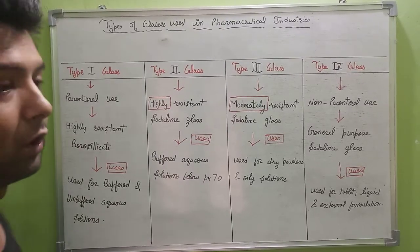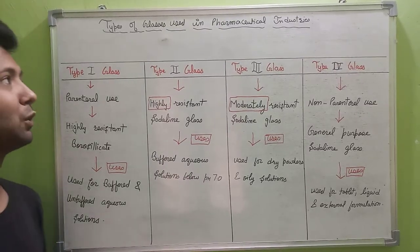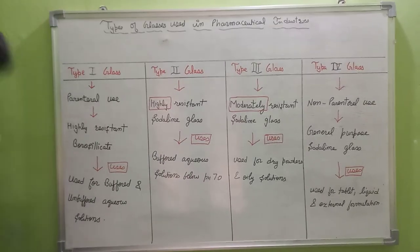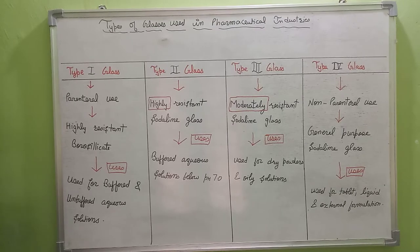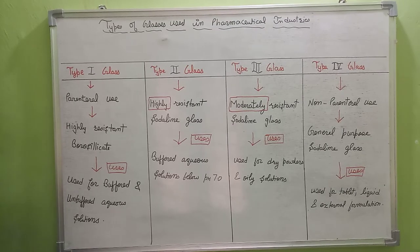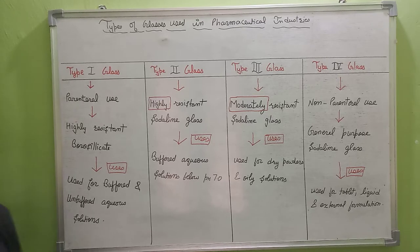Hello all and welcome. Today we will discuss about the types of glasses used in pharmaceutical industries. There are total 4 types of glasses which are used in pharmaceutical industries.